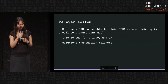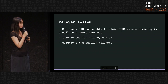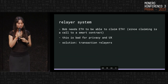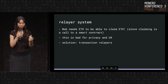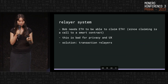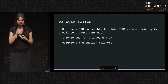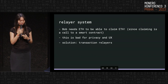The relayer system — another aspect is that it's also bad for privacy if you have to withdraw the ETH into an account that's already been used or already has ETH in it. So the relayer system is a good improvement for both privacy and UX.